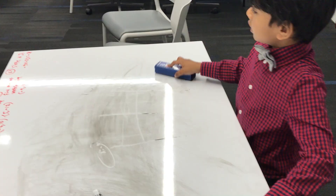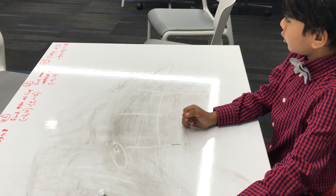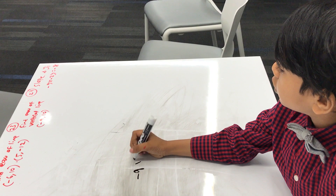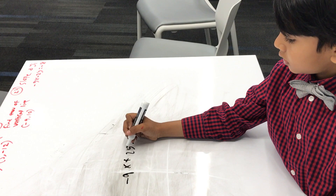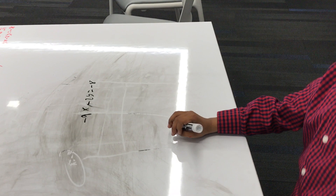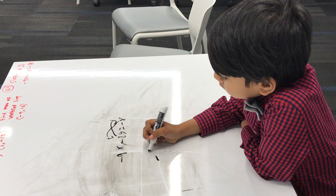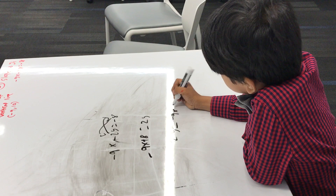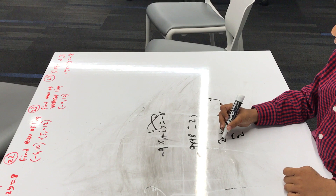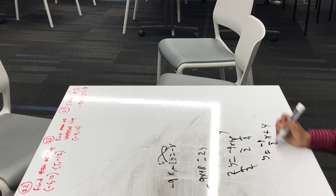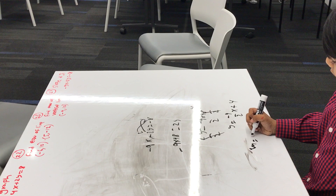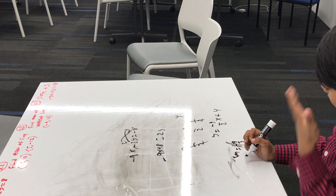We're getting close to the end. We have to find the slope and y-intercept of minus 9x plus 2y equals minus 8. We have to isolate y again. So 2y equals minus 9x plus 8... that flops. Divide everything by 2. So y equals minus 9 over 2 times x plus 4. So our slope is minus 9 over 2, and our y-intercept is (0, 4).